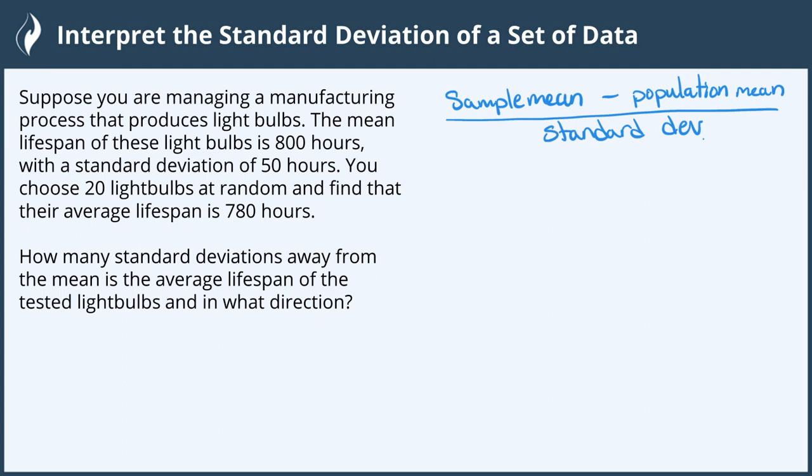For those of you who may already know some of these symbols, this would be our sample mean, x bar, minus the population mean, mu, divided by the standard deviation, sigma. And if you don't, that's okay, we'll just use the blue part.